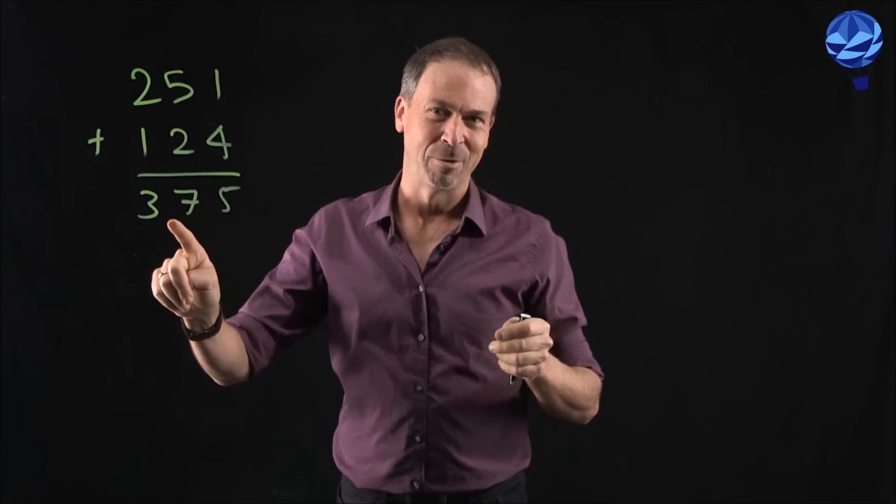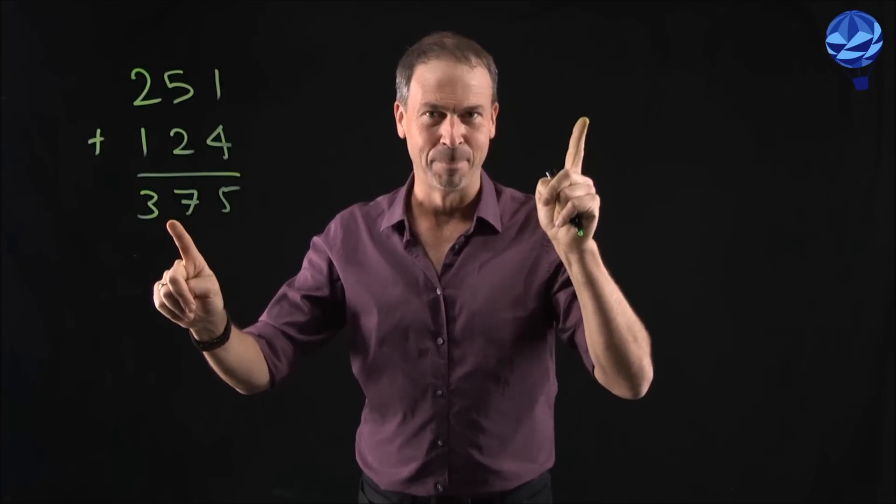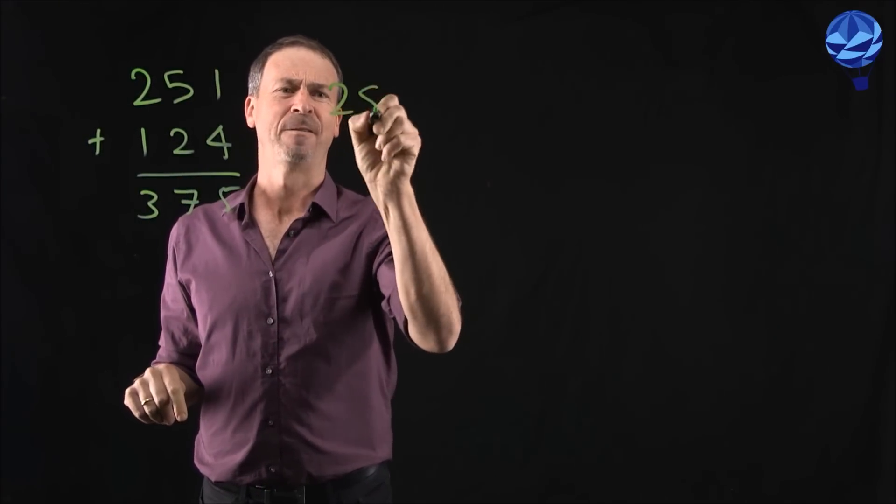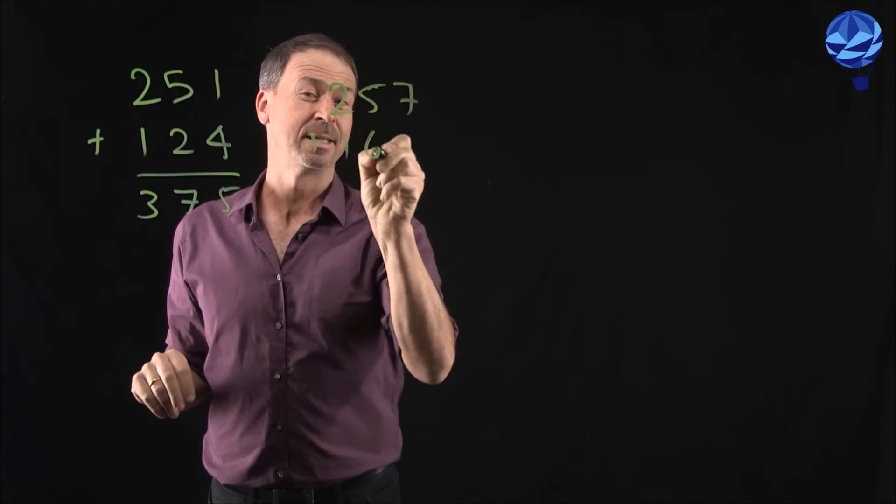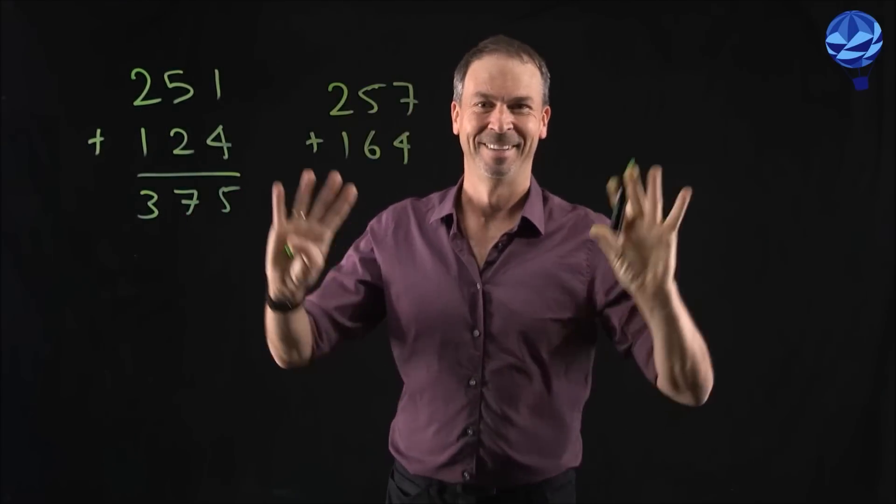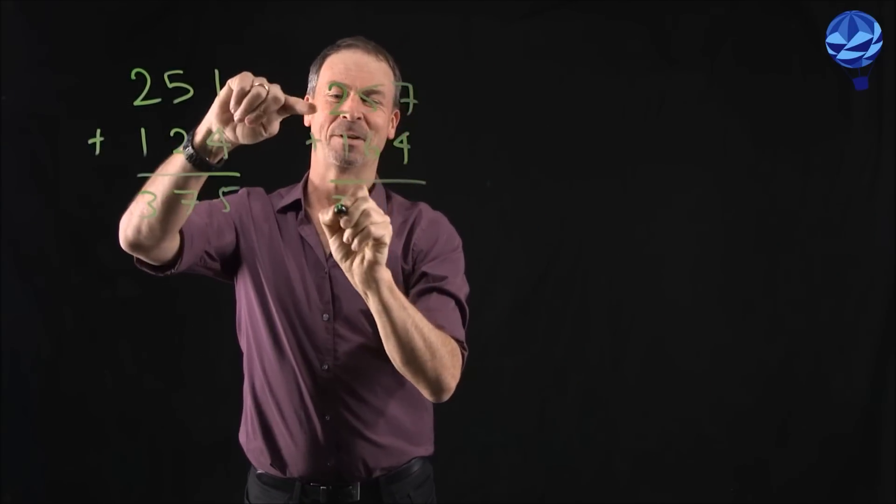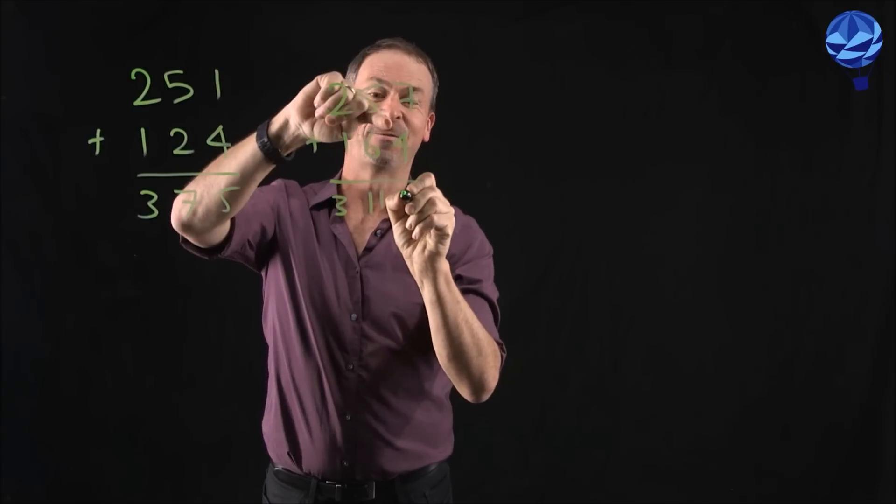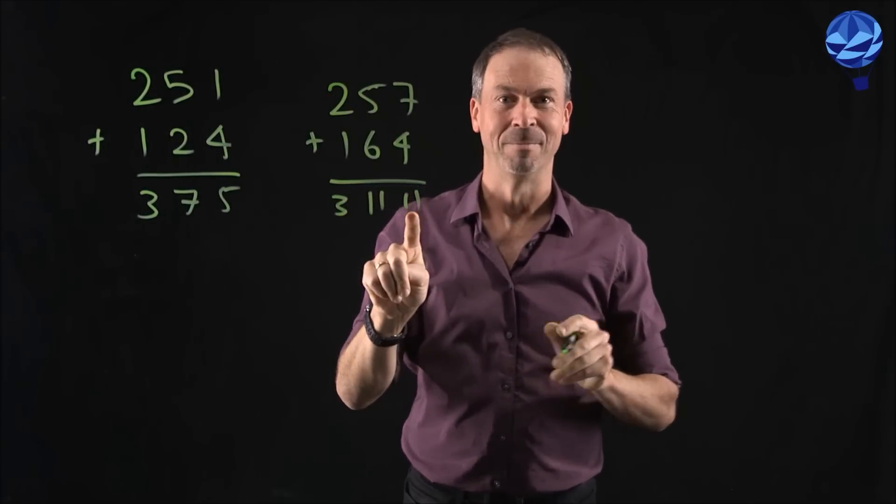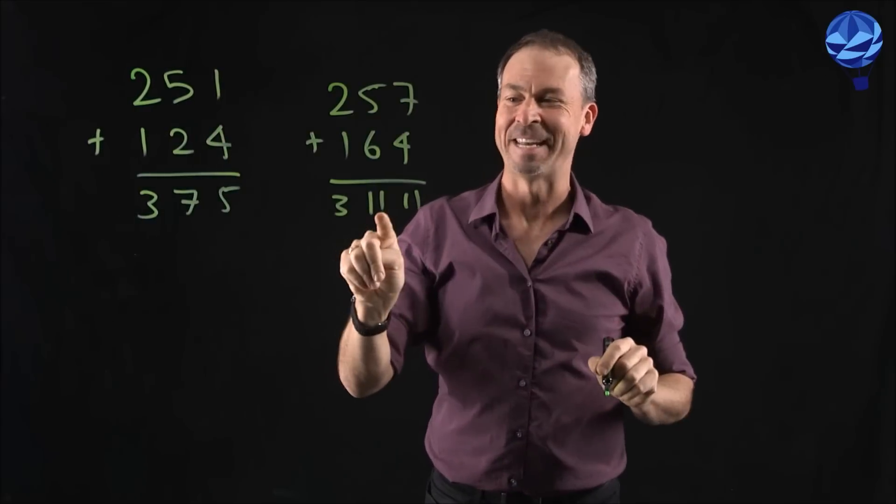Well, maybe this example here is too nice. Should I do a more complicated example? Yeah, let's do something like 257 plus 164. Is that better? Alright, here goes. 2 plus 1 is 3. 5 plus 6 is 11. 7 plus 4 is also 11. 311 to 11.